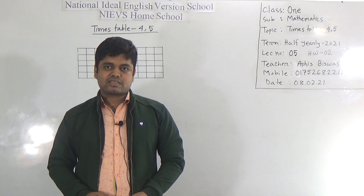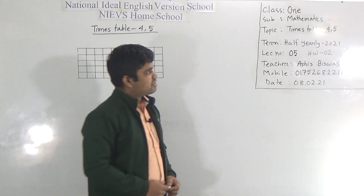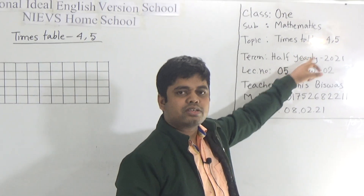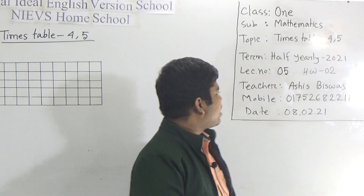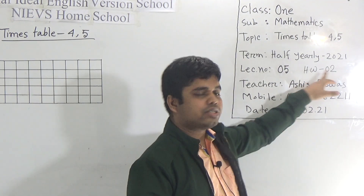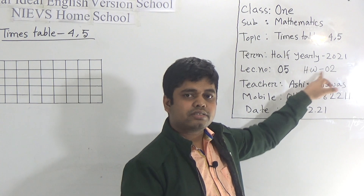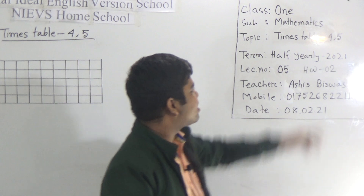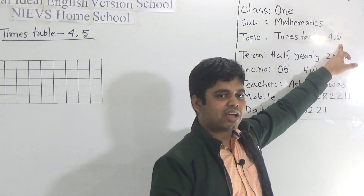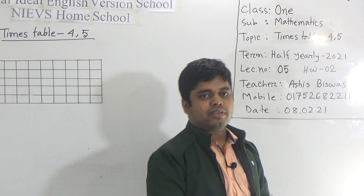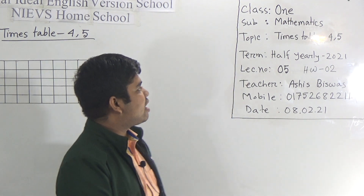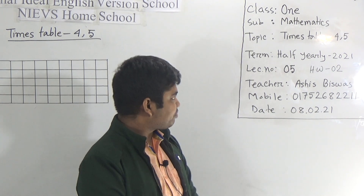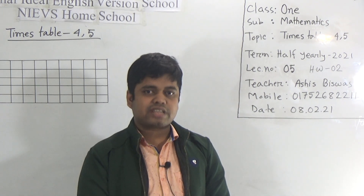So my dear students, let us start our class. Today is our lecture number 5 of half yearly 2021 and our SW number 2. We will repeat our SW number 2. Our today's topic is a very interesting topic which is times table 4 and 5. In our class, we shall learn how to write times table in our CW or SW copy.